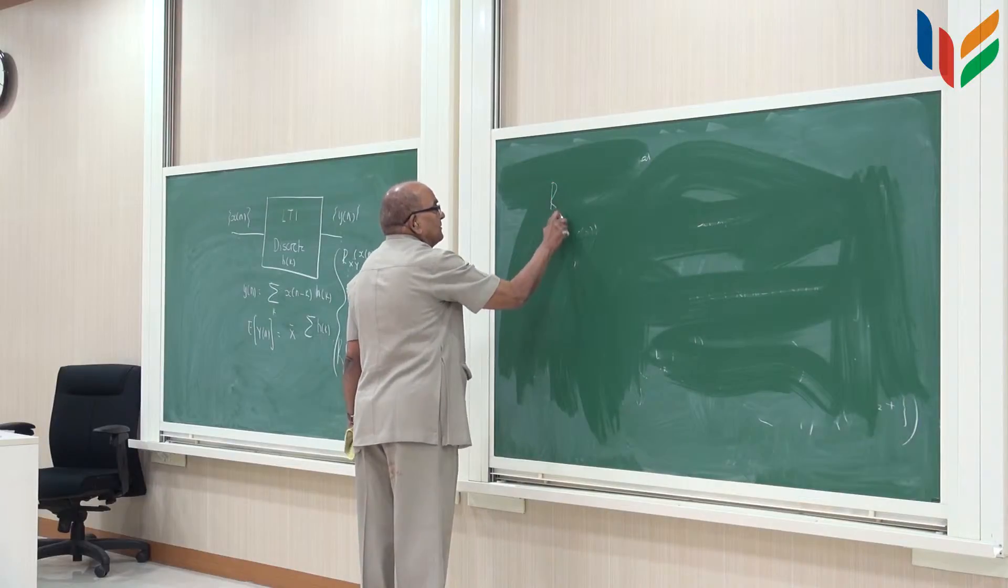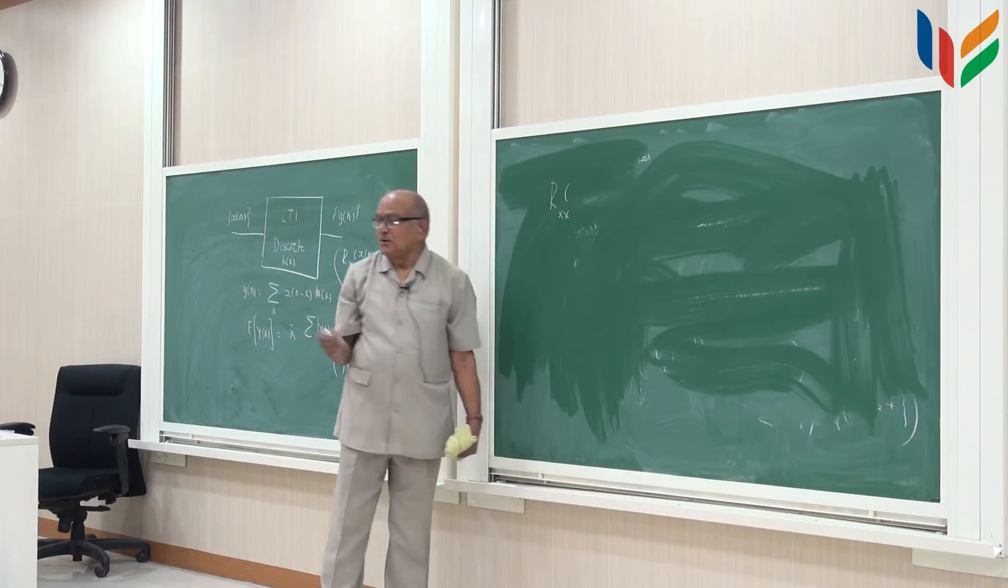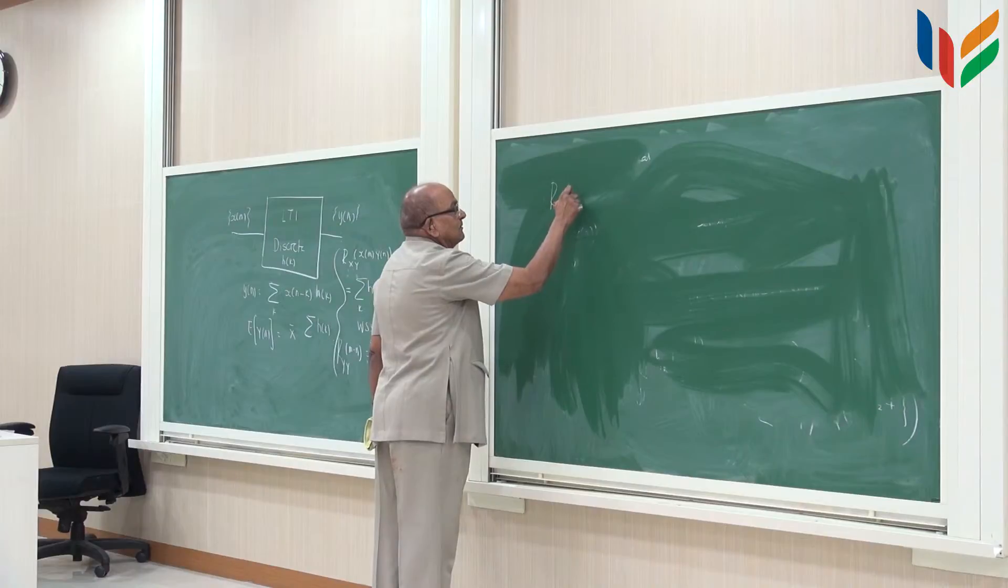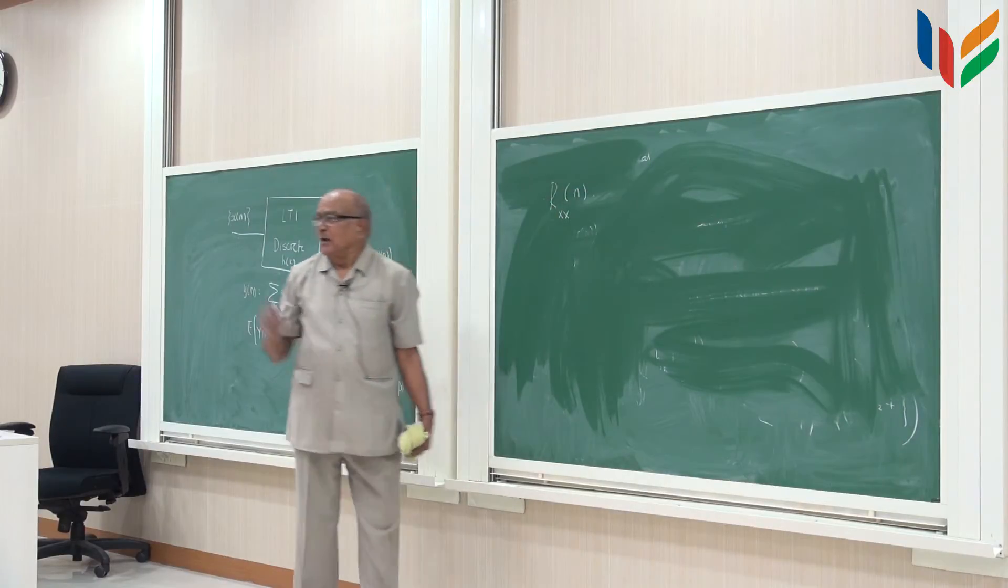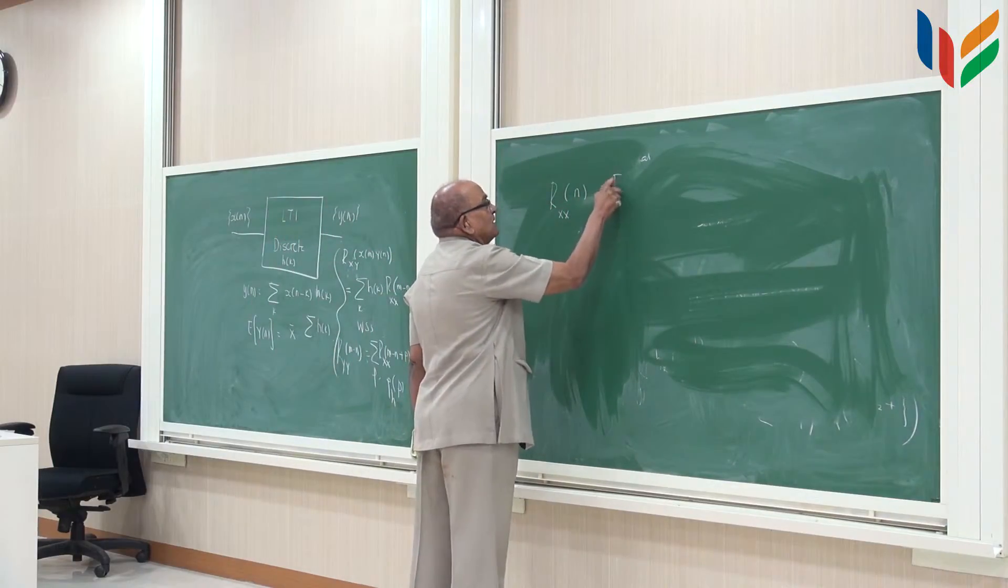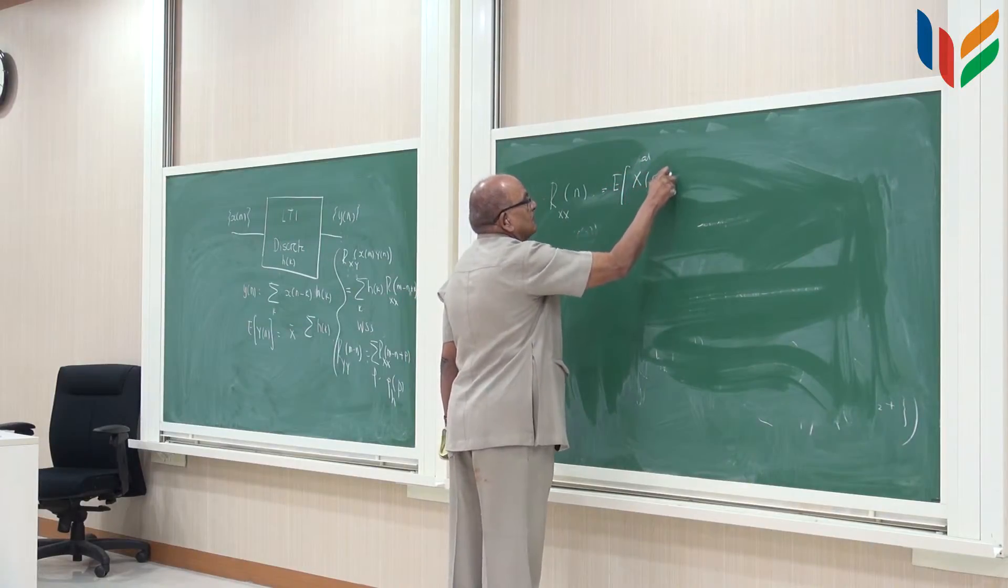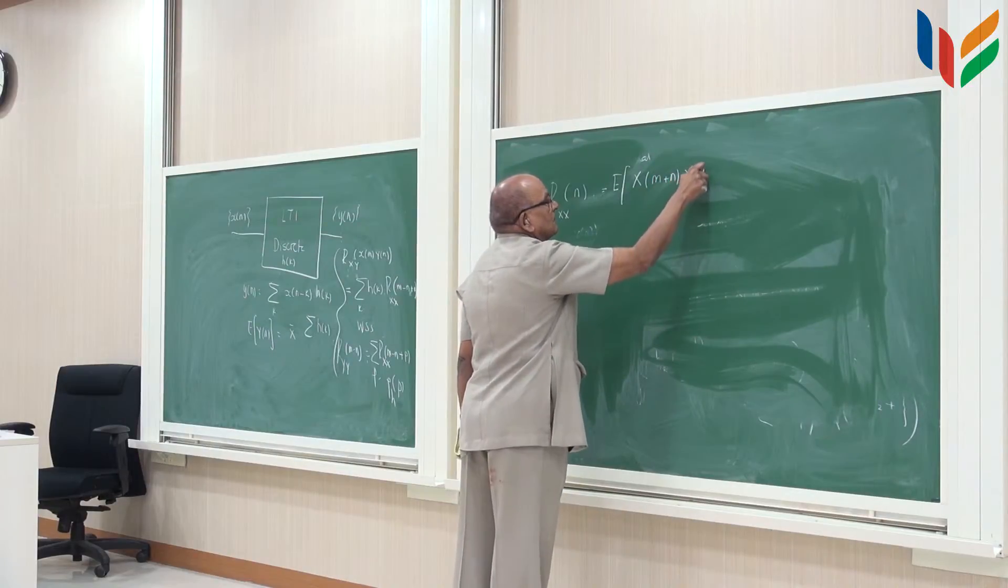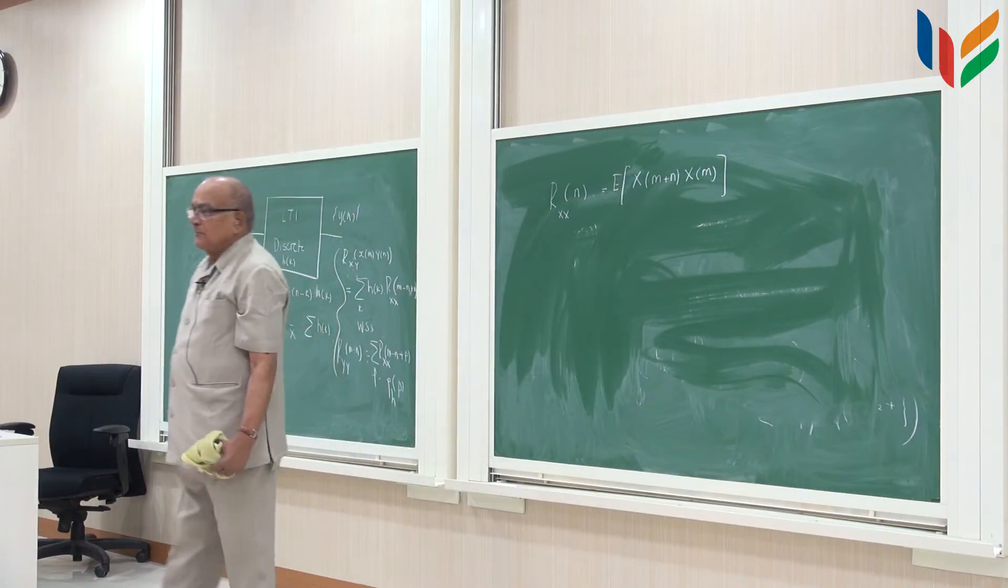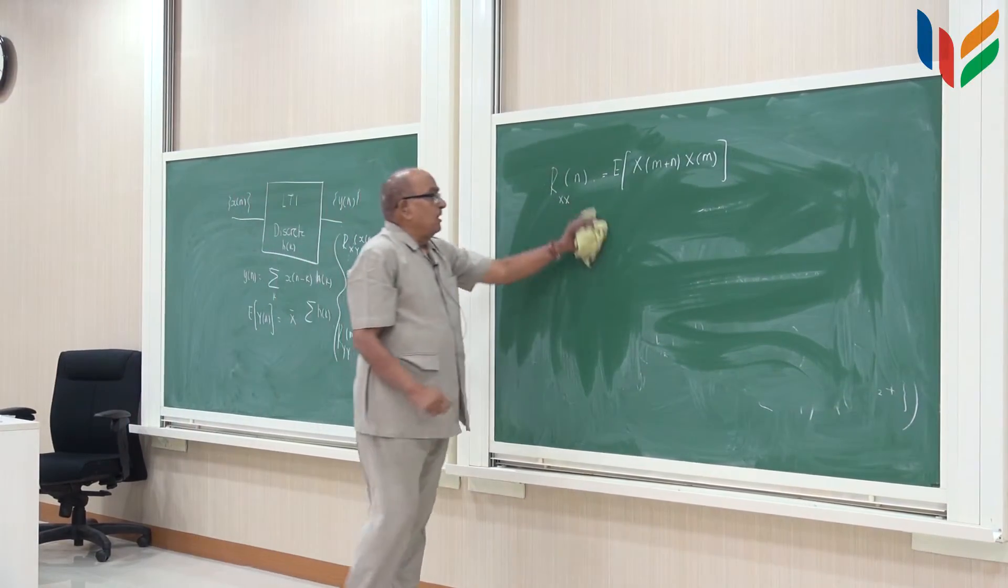Any r, let us say xx has some m minus n, so let us call this m minus n because it is a stationary process. Why is it stationary? So let me call this as in terms of some n which is equal to m minus n, some number which by difference is equal to n, so I define...